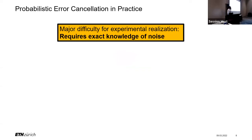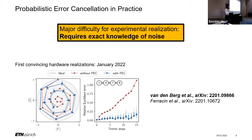I'd like to make a brief remark about experimental realizations of probabilistic error cancellation. While the theory sounds nice, it's actually difficult to realize in practice, because there's a hidden assumption: that you know the precise noise on your quantum hardware, which in practice is not the case. Figuring out the noise requires lots of tomography, which is extremely difficult and expensive on noisy devices. It was only as recently as January of this year that I would say the first convincing realization of probabilistic error cancellation was demonstrated. When we combine PEC with error correction, this problem of having to know the precise noise will be significantly alleviated.